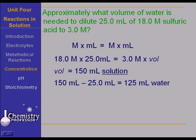if you took 25 milliliters of this material, 18 molar sulfuric acid, and you added 125 milliliters of water to it, you could come out with a little less or a little more than 150 milliliters total. That's why we say approximately.